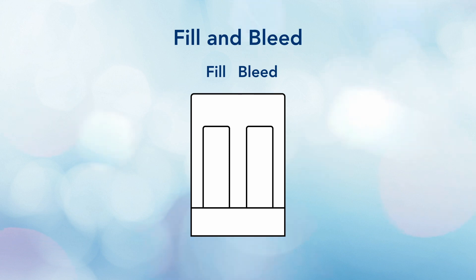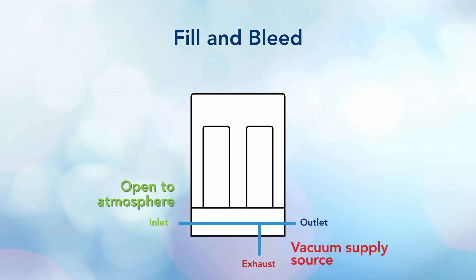As you can see, we have three primary ports: supply, exhaust, and outlet. When working with vacuum, we leave the supply inlet port open to atmosphere and place the vacuum supply source on the exhaust port.